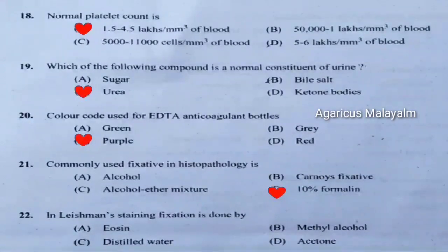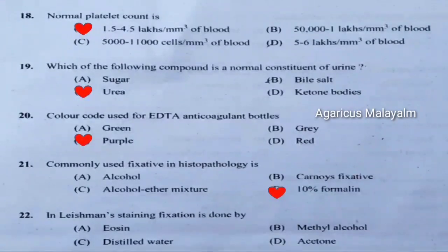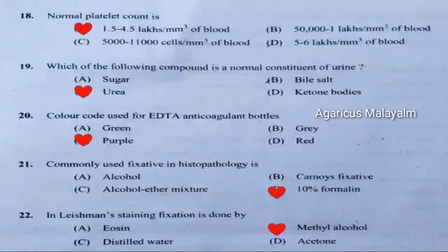Twenty-second question: Leishman staining fixation is done by. Correct answer is option B — methyl alcohol.